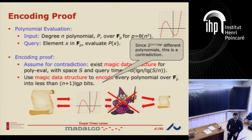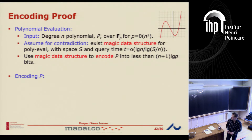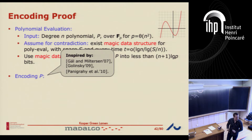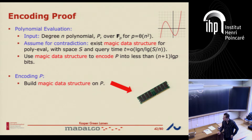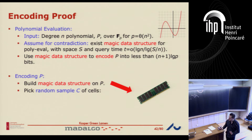So how do we do this? When we want to encode the polynomial — this technique has appeared in other forms in other papers, but there was also a log t factor there, so there's a small difference here. The idea is you start by building your magic data structure on the polynomial that you want to compress. This gives some memory representation — some contents of the memory bits: s cells of w bits. The high-level idea: I'm going to pick a random sample of these memory cells.